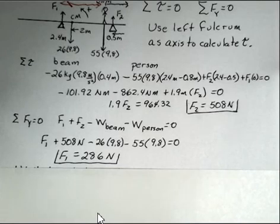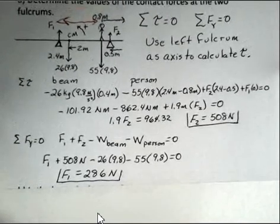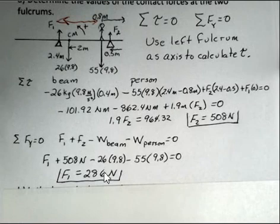So is that reasonable? Is it reasonable that F1 is smaller than F2? Well, notice where the person is standing. The person has a mass of 55 kilograms. The beam has a mass of 26 kilograms.